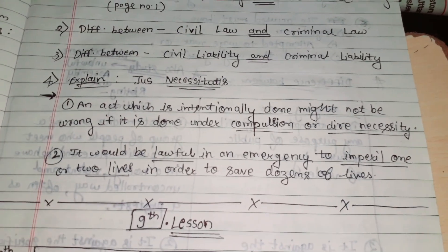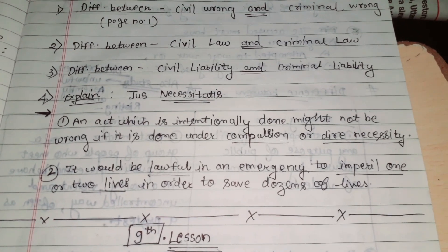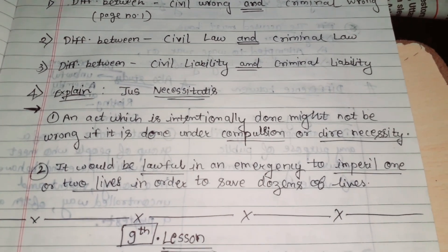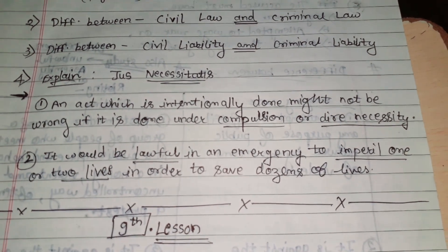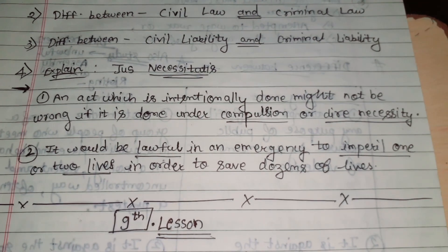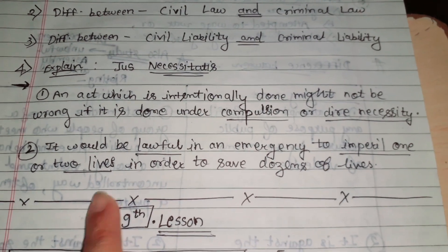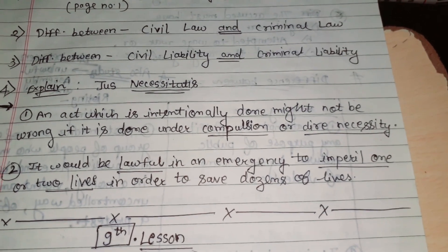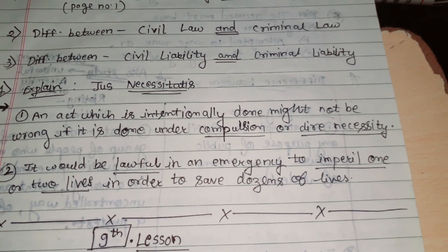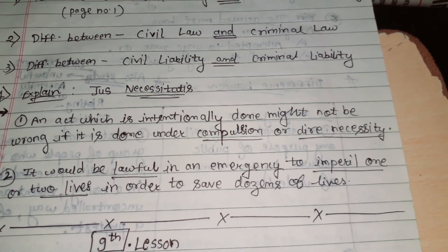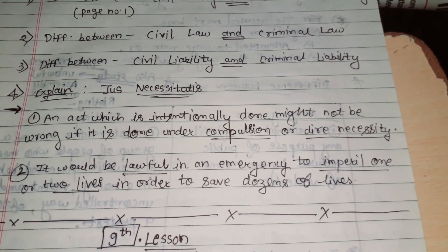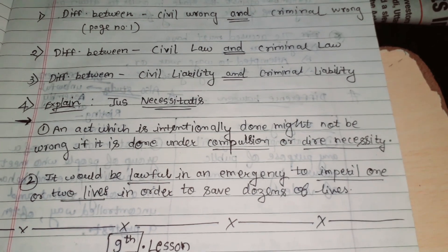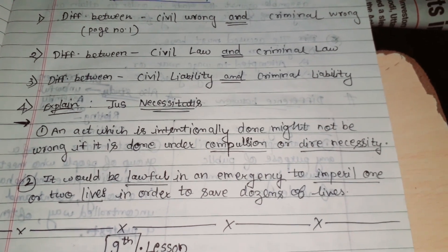The concept is jus necessitatis — meaning, explain jus necessitatis. That is, an act which is intentionally done might not be wrong if it is done under compulsion or dire necessity. The act which is done under compulsion or dire necessity, but is wrong in nature, will still not be considered a wrong act.